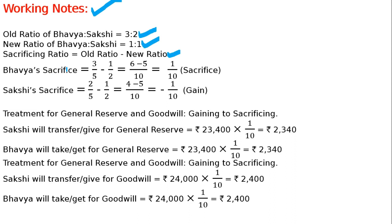Bhavya's sacrifice: 3/5 minus 1/2. LCM is 10, so that is 6/10 minus 5/10, which equals positive 1/10. So Bhavya is sacrificing. The one who sacrifices receives — meaning their capital account will increase. So Bhavya's capital account will be increased for the treatment of goodwill and general reserve.